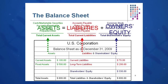Under shareholders' equity you may see items like common stock, preferred stock, paid-in surplus, paid-in capital, and retained earnings. The key thing to remember about the balance sheet is: assets equal liabilities plus owner's equity. That is a key equation you must take with you from this course — never forget it.